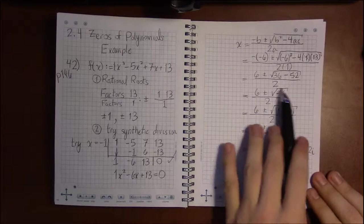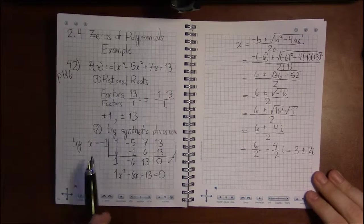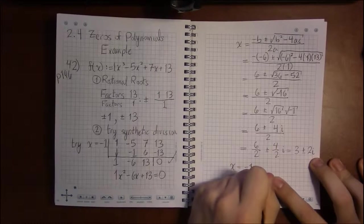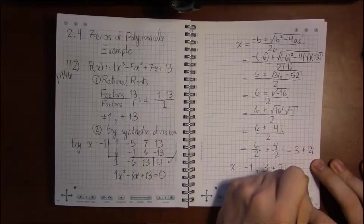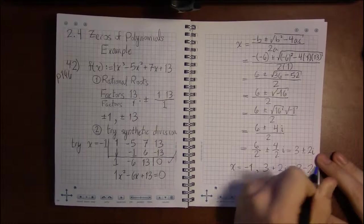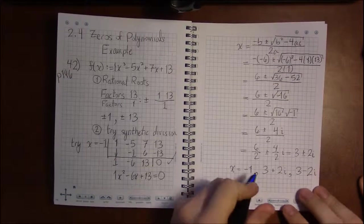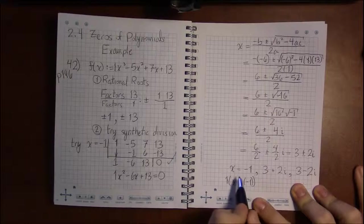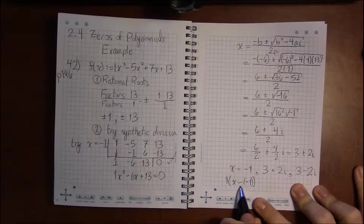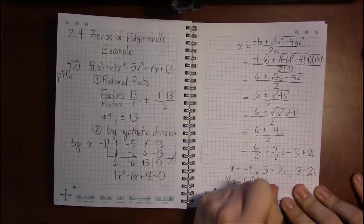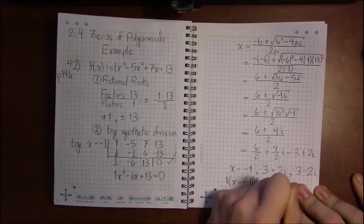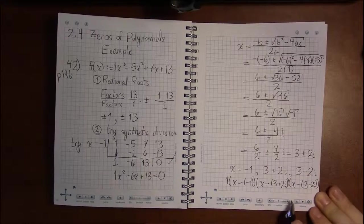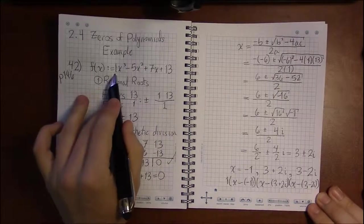Notice, if we prohibited square roots of negatives, we'd only have one zero here. But when we allow ourselves to use complex numbers, we end up with 3 zeros. It's interesting that we have three zeros and a degree 3 polynomial. These zeros correspond to factors: x equals minus 1 corresponds to x minus minus 1, the 3 plus 2i corresponds to x minus 3 plus 2i, and 3 minus 2i corresponds to x minus 3 minus 2i. If you multiplied all that out and simplified, you'd get back to that polynomial.